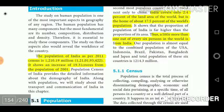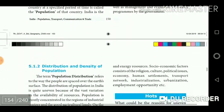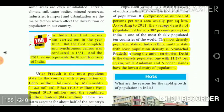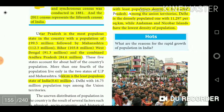One out of every six persons in the world is from India. The first census was carried out in 1872, but the first complete and synchronous census was conducted in 1881, and the 2011 census represents the 15th census of India. Uttar Pradesh is the most populous state with 199.5 million, followed by Maharashtra (112.3 million), Bihar (103.8 million), West Bengal (91.3 million), and combined Andhra Pradesh (84.6 million). Sikkim is the least populous state with 0.61 million.